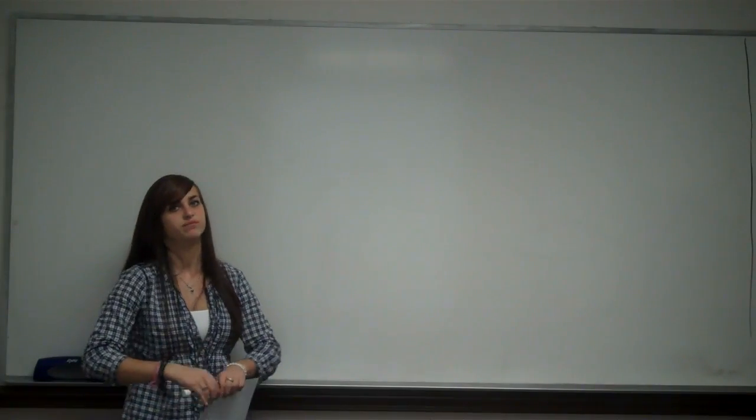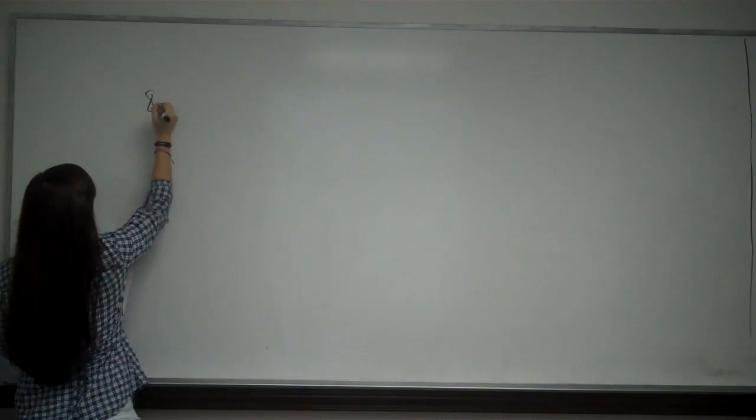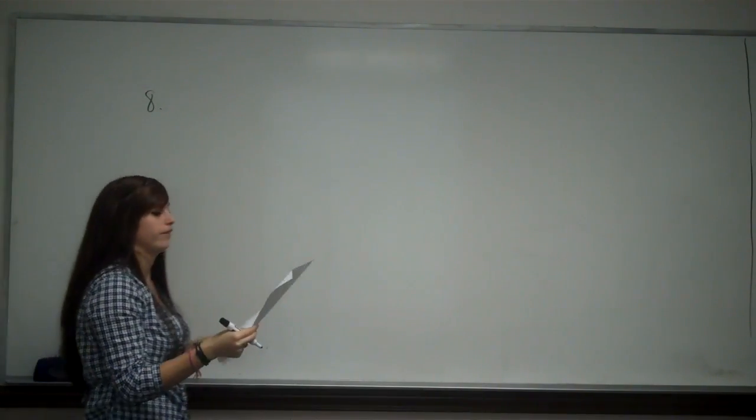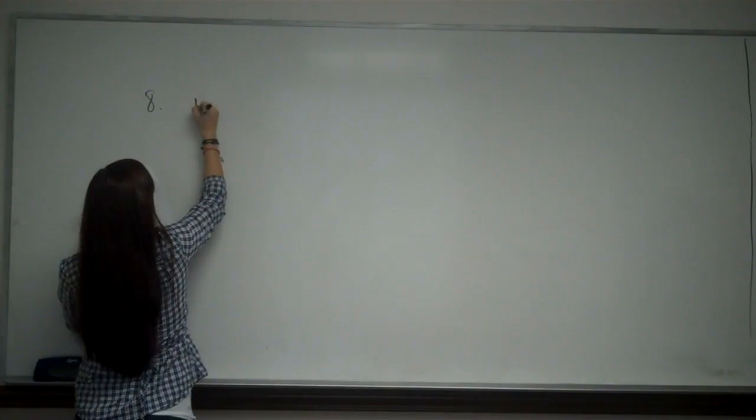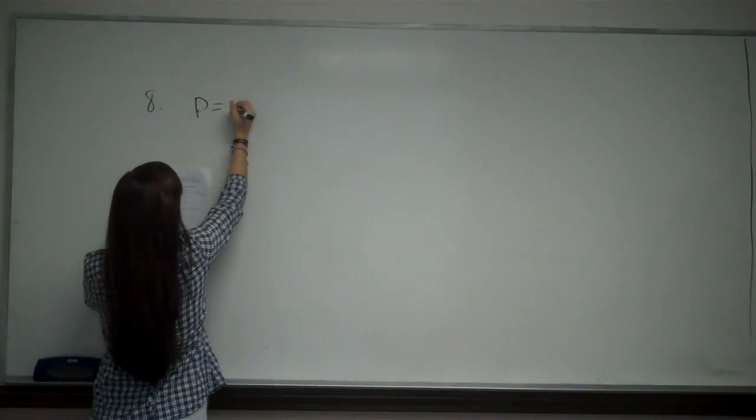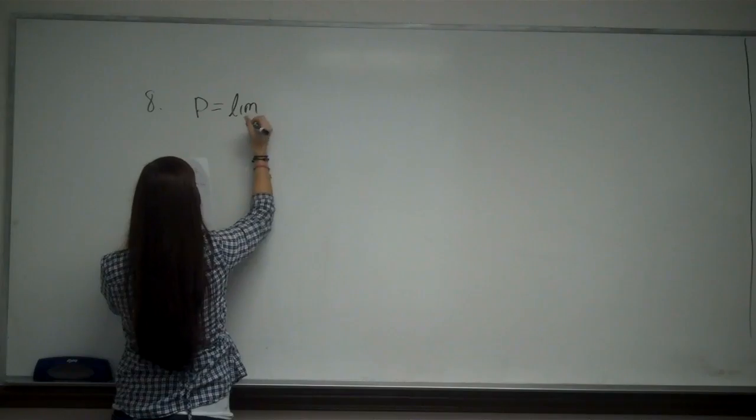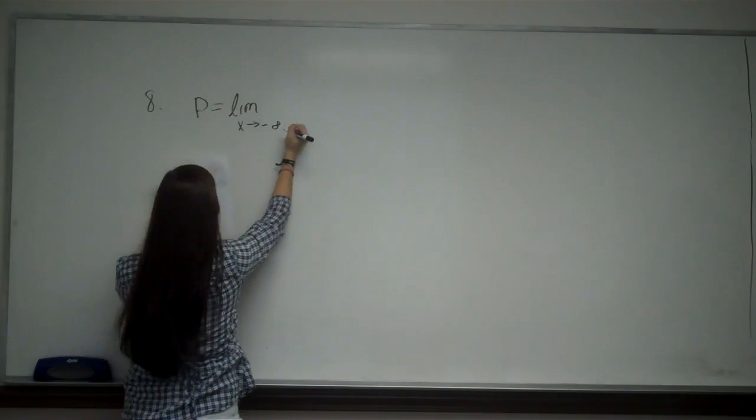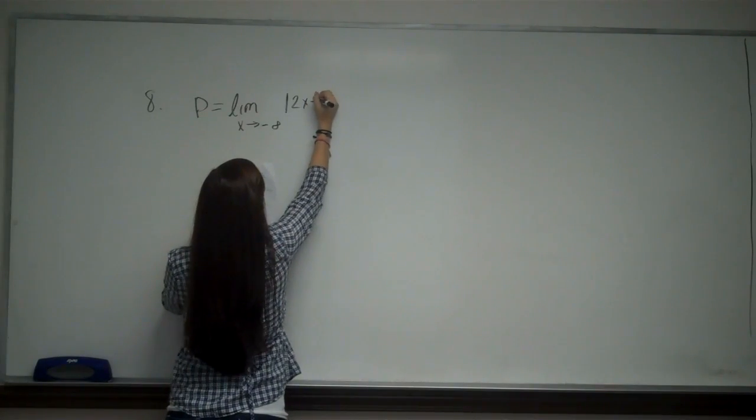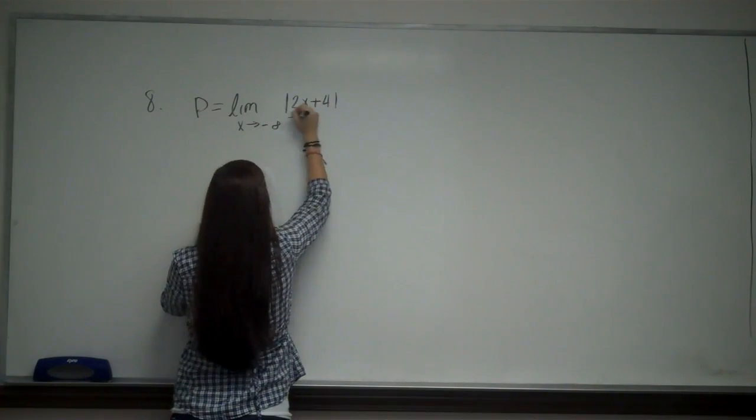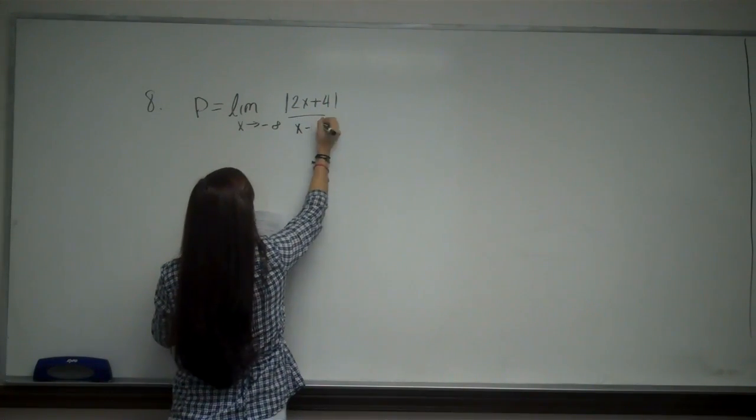I'm going to do problem number eight. So number eight, we're going to be finding limits. The first limit is let P equal the limit as X approaches negative infinity of the absolute value of 2X plus 4 divided by X minus 1.